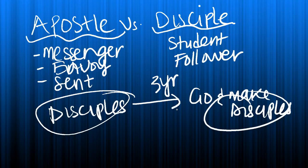So disciples are followers and students, and apostles are people that are sent out to represent the sender — in this case, Jesus. That's it for this video. Thanks for watching.